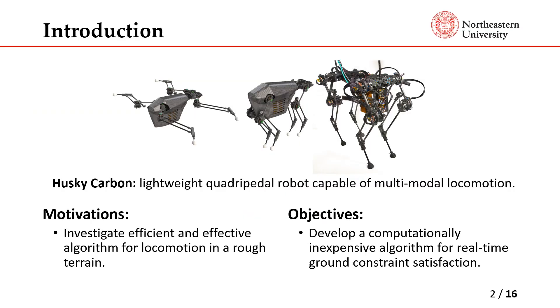A brief introduction of our work. This work is motivated as an algorithm to be implemented in Husky Carbon, as seen in the picture, which is a quadrupedal robot that's capable of multiple locomotion modes. This robot is designed such that the legs can be expanded outwards into the UAV mode as seen in the left picture. The motivation of this work is to investigate an efficient and effective algorithm for locomotion in rough terrain. This is a difficult problem because on legged locomotions, ground contact forces constraints must be satisfied in order to achieve a stable gait.